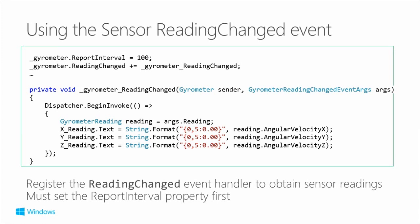The report interval is just a throttling device so you don't get overwhelmed with readings. So you're saying, okay, I only want to get an update every 100 milliseconds - that's the example here. You'll get the event fire and can read whatever data that particular sensor gives you. This is a gyrometer which gives you back a gyrometer reading changed event args, and from that you can get an angular velocity of X, Y, and Z. The different sensors have their own flavor of the reading changed event args which gives you the particular sensor readings data that that sensor returns.